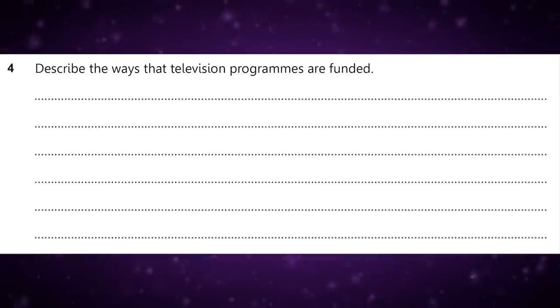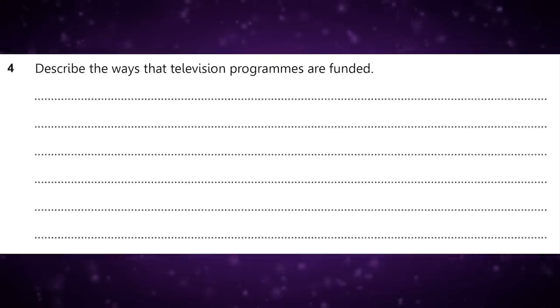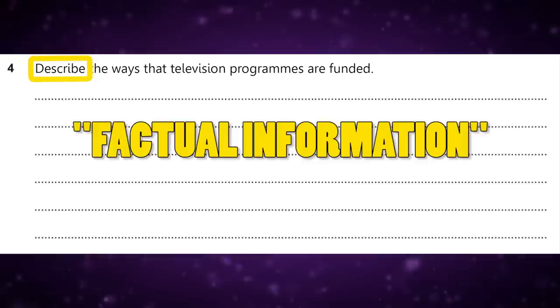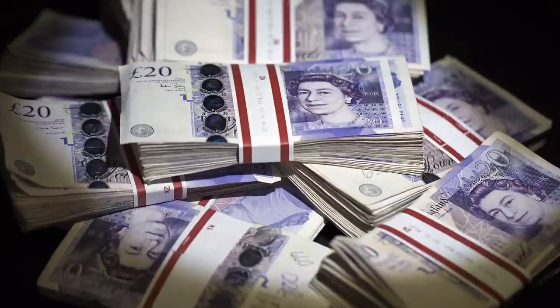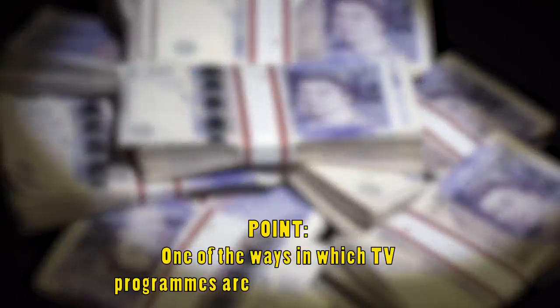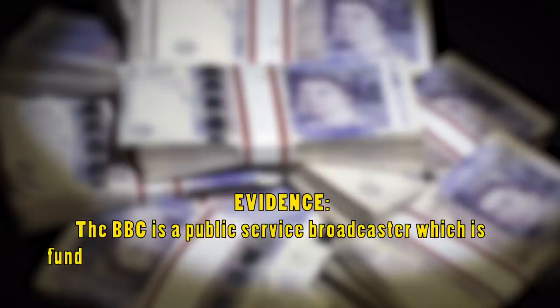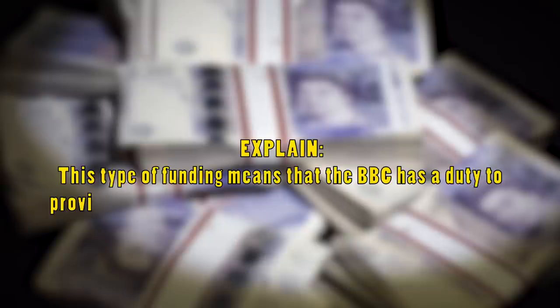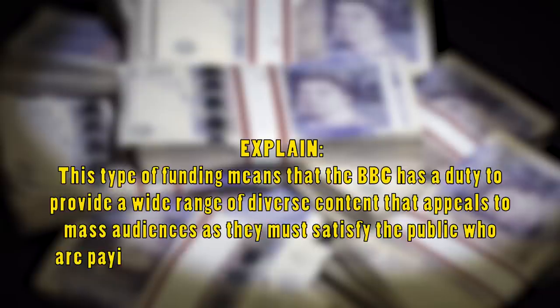Another industry question might look like this: 'Describe the ways that television programs are funded.' This question is slightly different in that we are being asked to describe, which means we need to focus mainly on providing the correct factual information in detail. As with all responses, the ones that gain higher marks are the ones that provide examples. Here is one example paragraph: 'One of the ways in which TV programs are funded is by the public. The BBC is a public service broadcaster which is funded by the TV licence, paid by every member of the British public who watches live TV at home.'